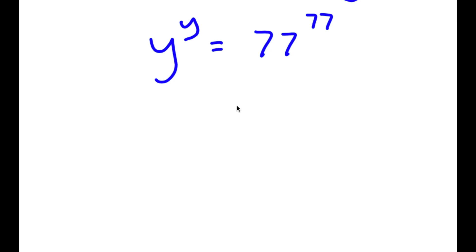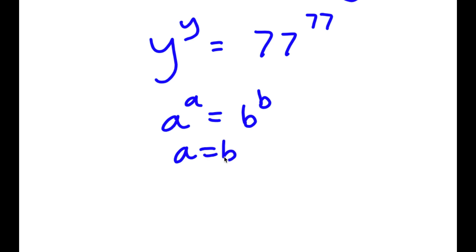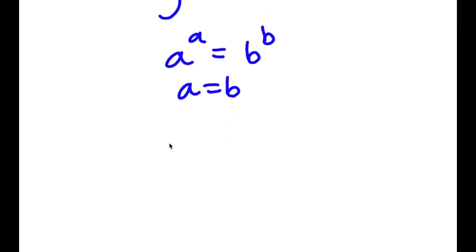Now, if I have something in the form a to the power of a equals b to the power of b, this means that a equals b. So since y to the power of y equals 77 to the power of 77, this means that y equals 77.